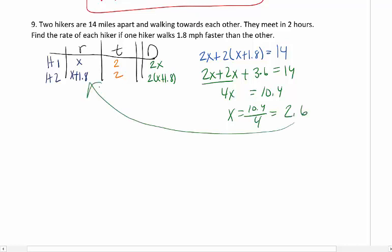What is this? It is my rate, which is what I wanted. So the first hiker's rate is 2.6 miles per hour, which is a legitimate number. We add 1.8 to the second number, which gives us 4.4 miles per hour for the second person.